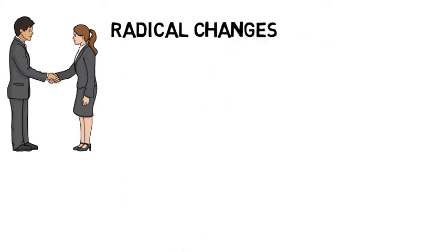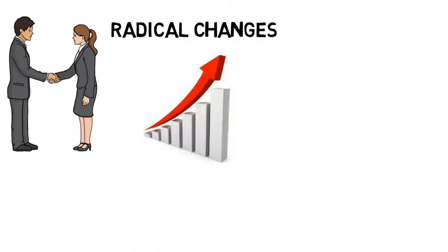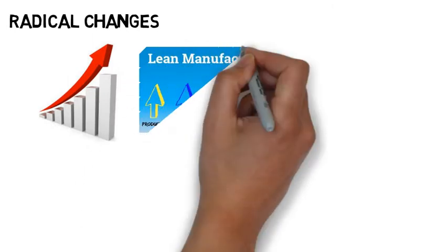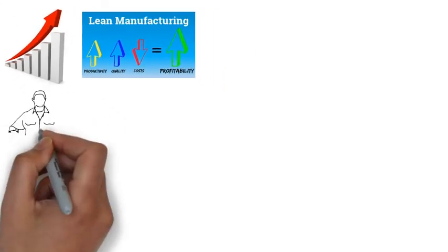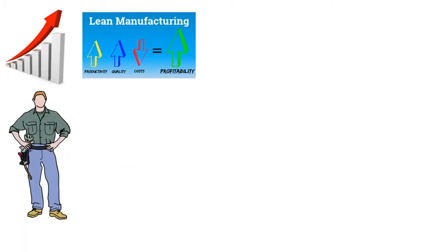So, Kaizen can be translated as continuous improvement. Kaizen is core to Lean Manufacturing. It was developed in the manufacturing sector to lower defects, eliminate waste, boost productivity, encourage worker purpose and accountability, and promote innovation.